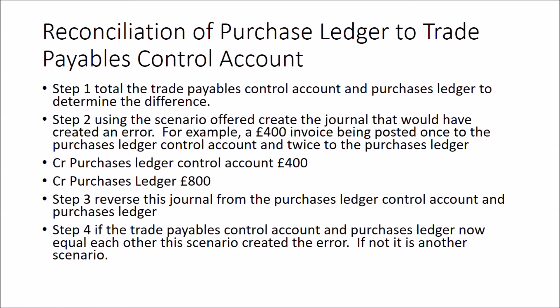For each scenario, create the journal that would have been created. For example, if the scenario says a £400 invoice was posted once to the purchase ledger control account and twice to the purchase ledger, we've credited the purchase ledger control account £400 and credited the purchase ledger £800. We then reverse that journal on both sides. If the trade payables control account and the purchase ledger now reconcile to one another, that was the error. If not, it's one of the other scenarios given.